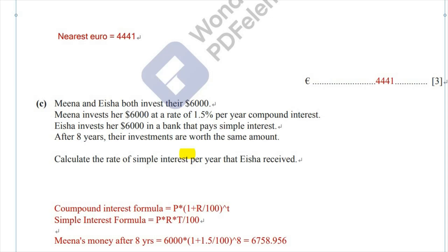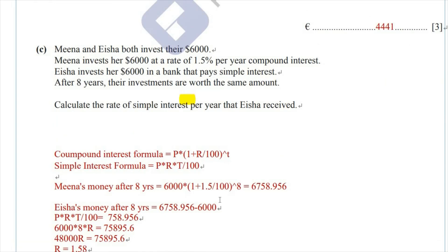Now we move on to Isha's side. We need to find the rate at which she invested. As stated, after eight years the investments are worth the same amount, so Isha's money after eight years is also 6,758.956. Since simple interest only gives you the profit, not the total, we subtract 6,000 from 6,758.956 to get the interest earned.